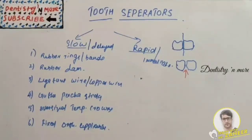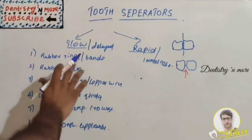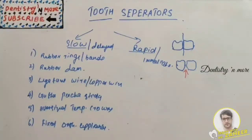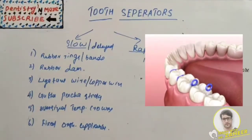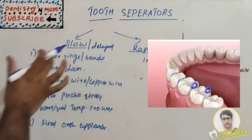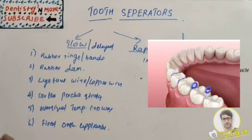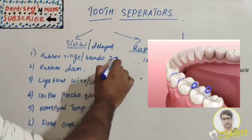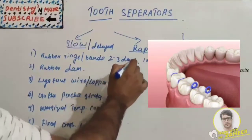The first one, rubber rings or bands, is used in the first step of orthodontic treatment. It is stretched and placed interproximally between two teeth to achieve separation. Usually heavy or extra heavy type is preferred. The time of separation is usually 1 hour to 24 hours.